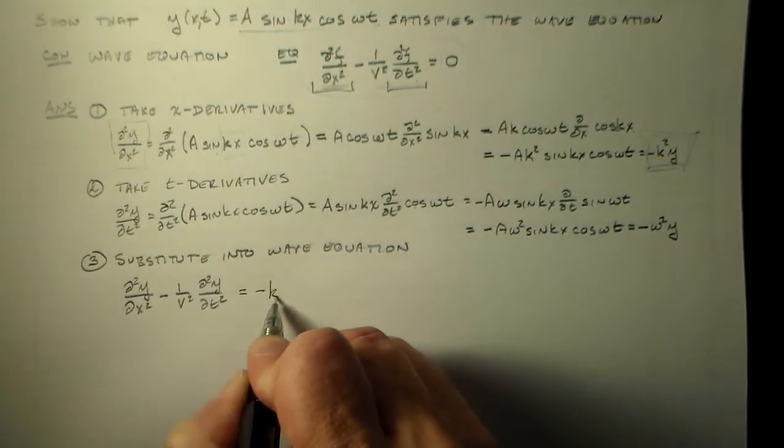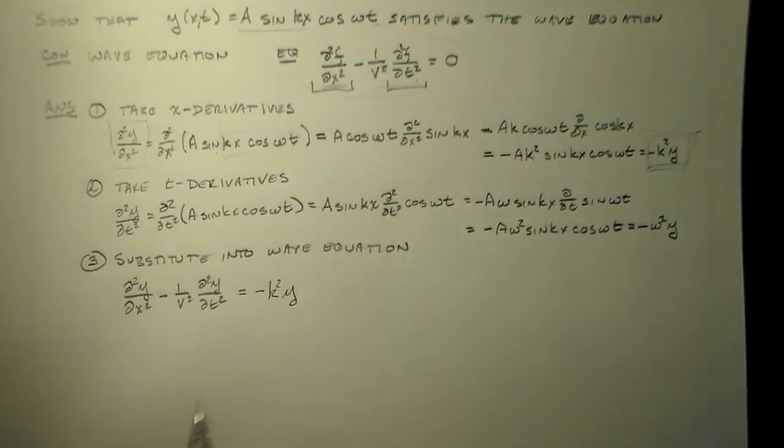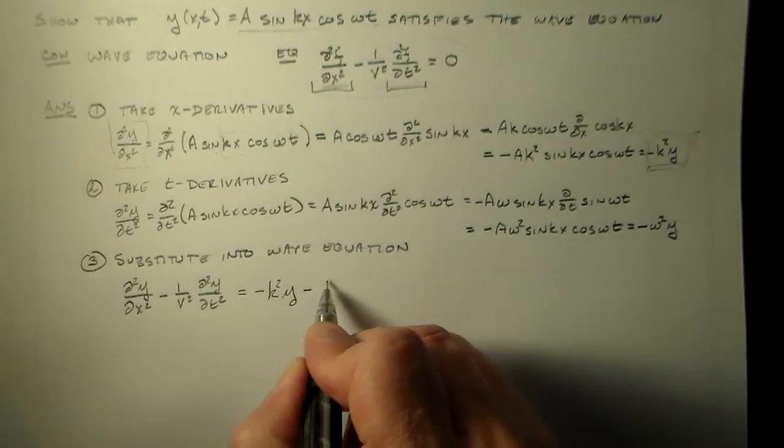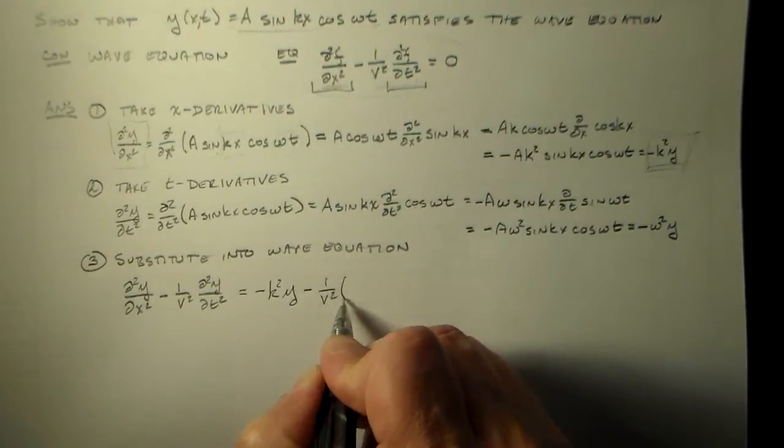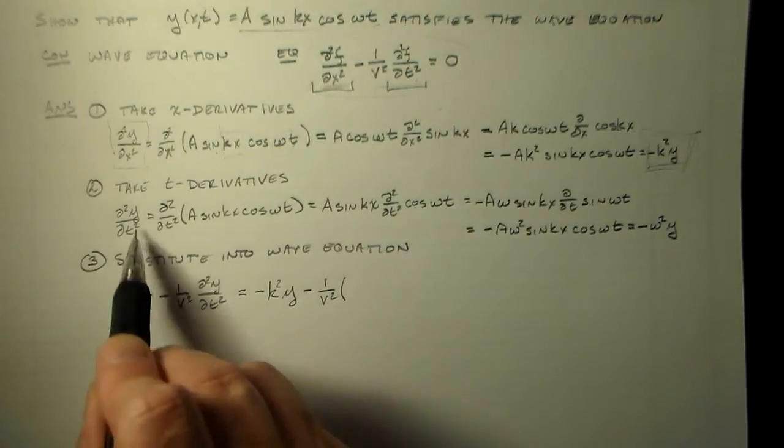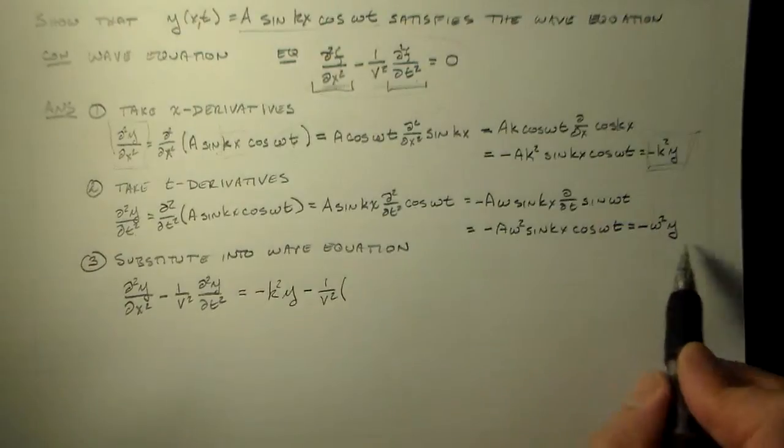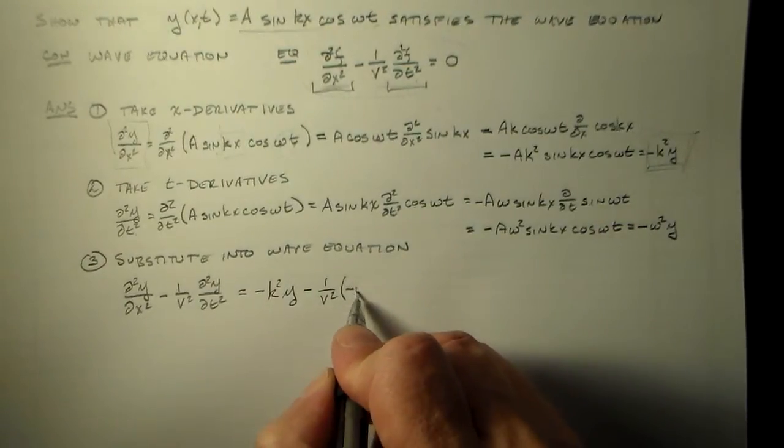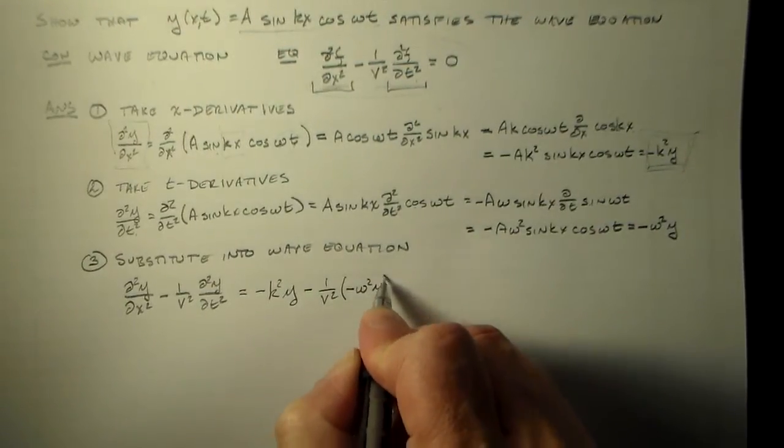So that's minus k squared y minus 1 over v squared. And I also know this d squared y dt squared is equal to minus omega squared y.